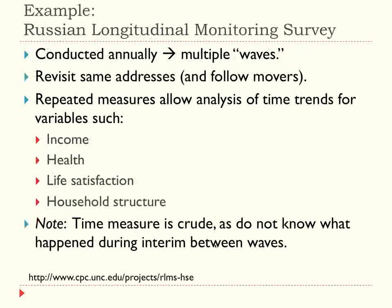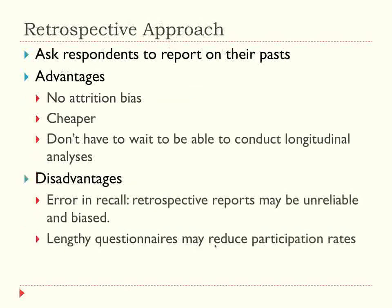An example of a prospective survey is the Russian Longitudinal Monitoring Survey, conducted annually. The most recent variant started in 1994, so if you were collecting data in 1994, you had to wait until now to get 20 years of data. These repeated measures let us analyze trends in income, health, and life satisfaction. However, the time measure is crude — they don't ask people about everything that happened between survey waves, just about right now or the last 30 days. It also has serious attrition issues.